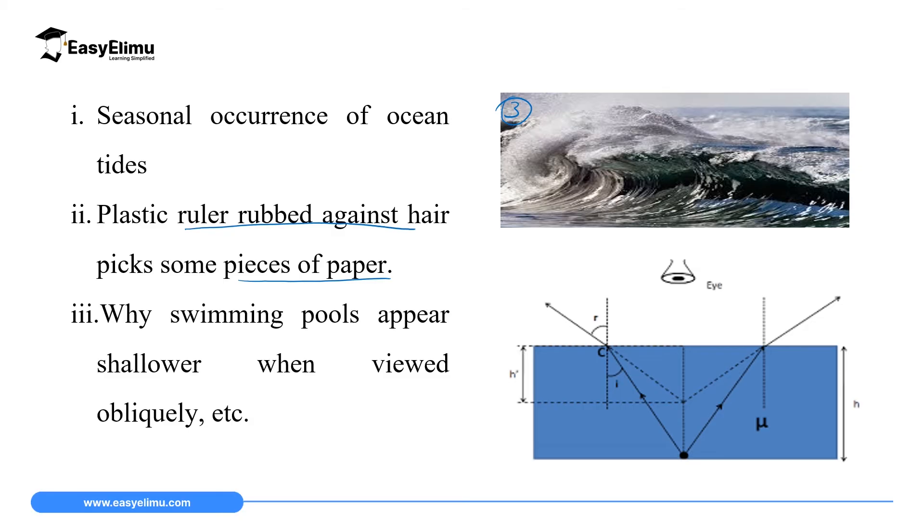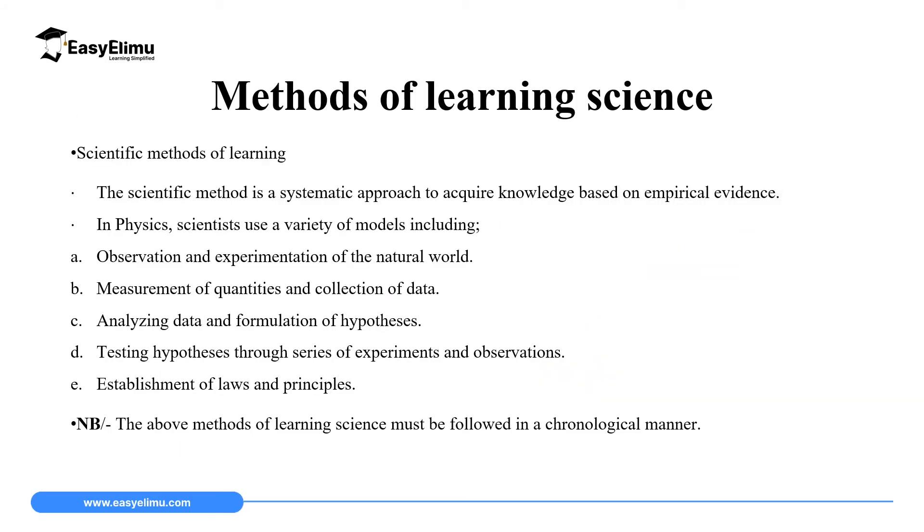Another phenomenon is swimming pools appearing shallower when viewed obliquely. Obliquely means at an angle. So when you view swimming pools at an angle, you will see them appearing shallower than they actually are. And then when you view them 90 degrees to the surface, you are going to realize they are very deep. You can see from this eye, when you view them from this eye position, you see the real depth very deep. But if you view them from this point here, you are going to see swimming pools appearing very shallow. And that one will be explained in Form 3, a topic called refraction.